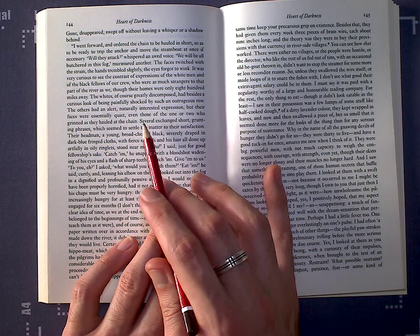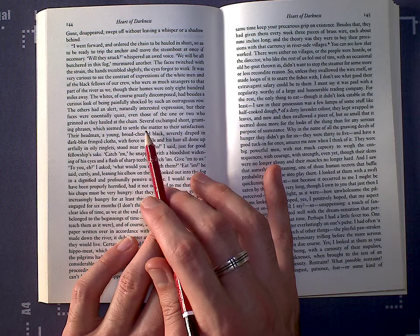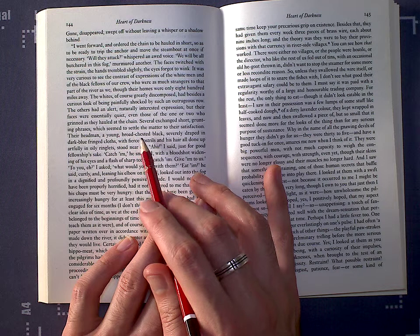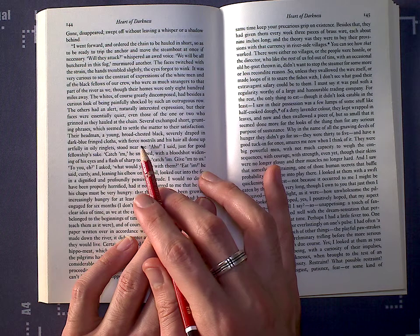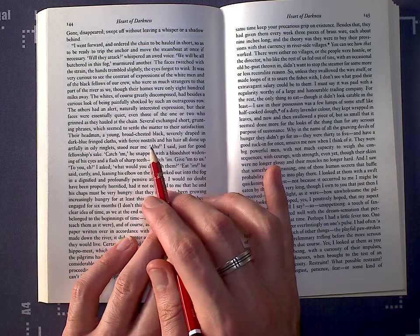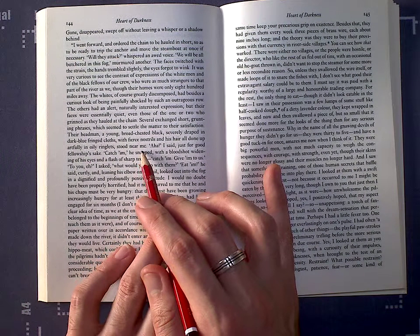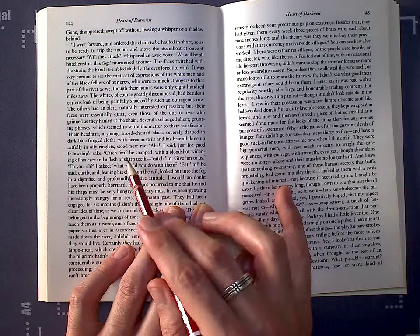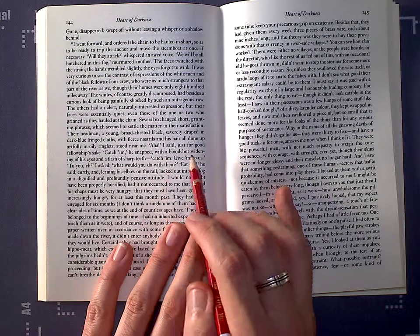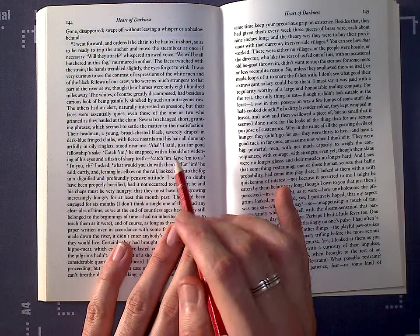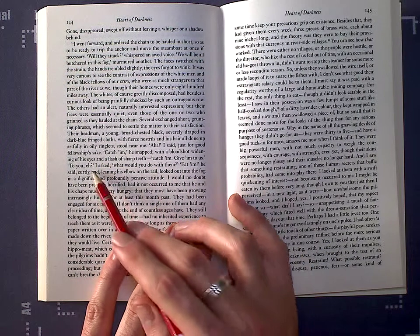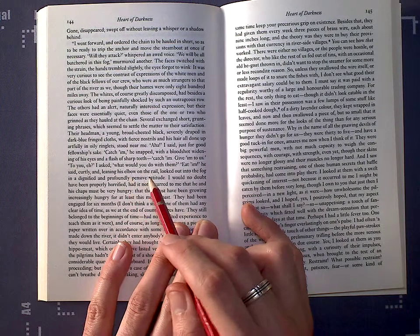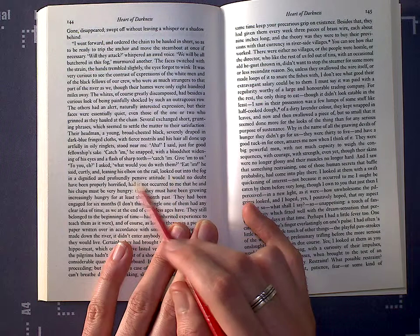Even those of the one or two who grinned as they hauled at the chain. Several exchanged short, grunting phrases which seemed to settle the matter to their satisfaction. Their headman, a young, broad-chested black, severely draped in dark blue fringed clothes, with fierce nostrils, and his hair all done up artfully in oily ringlets, stood near me. Aha, I said, just for good fellowship's sake. Catch him, he snapped, with a bloodshot widening of his eyes in a flash of sharp teeth. Catch him, give him to us. To you, eh? I asked. What would you do with them? Eat him, he said curtly, and leaning his elbow on the rail, looked out into the fog in a dignified and profoundly pensive attitude.